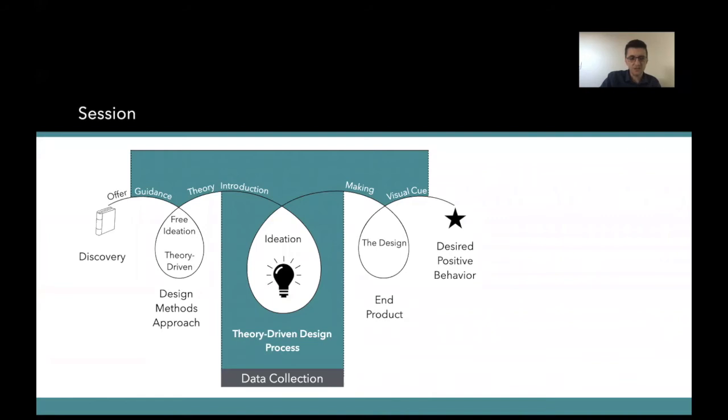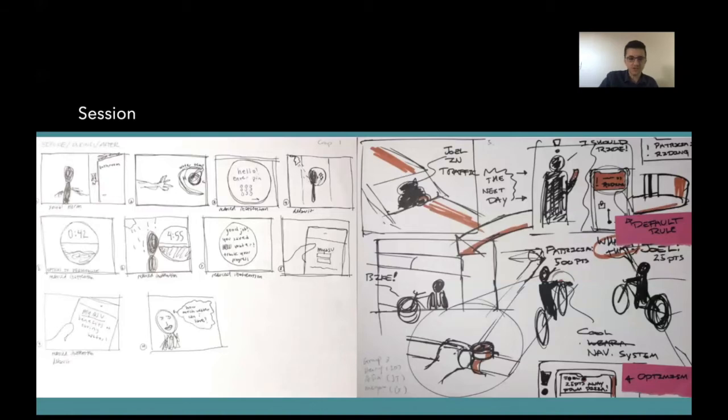So the session, we ran the session following a plan where we had the students get familiar with the ideas and the themes of sustainability. Then we introduced the theory. We had a presentation and explained the concepts, basic concepts of the theory. And we had the students ideate for a period of time, and then we also had them discuss the ideas that they had, and make decisions about what idea they would like to select for the desired positive behavior. This was a short session, and at the end they produced these storyboards with the final idea.